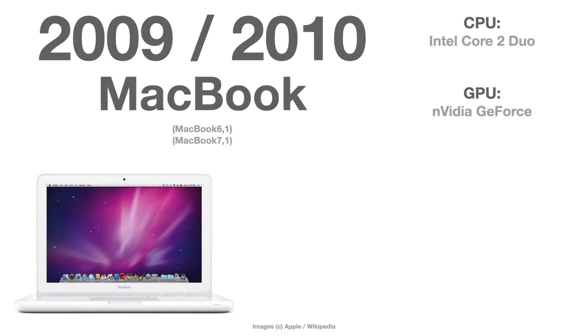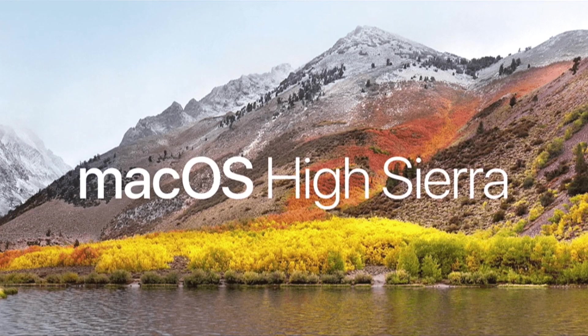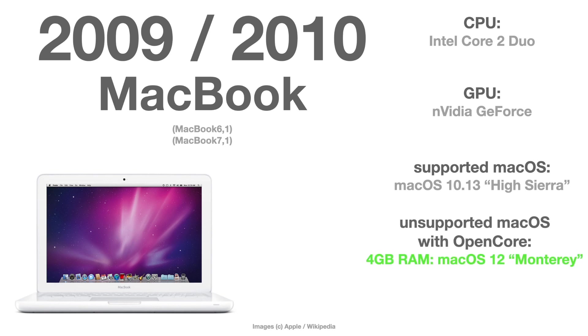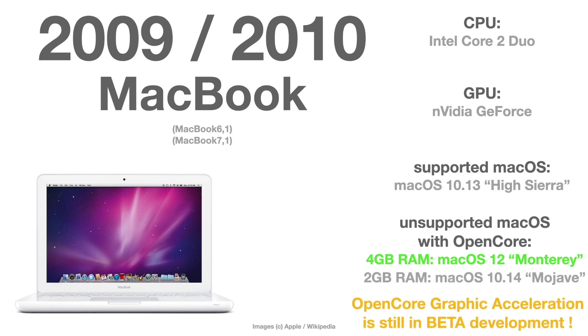The MacBook series 6 and 7 from 2009 and 2010 are officially supported only until macOS 10.13 High Sierra, with the same reason as all other Macs that only support High Sierra — the graphic chip is not Metal capable. With the graphic acceleration patch of OpenCore, if you have a 4 GB RAM model, you can bring it up to macOS 12 Monterey. If you only have a 2 GB model, you have to stay with macOS 10.14 Mojave.